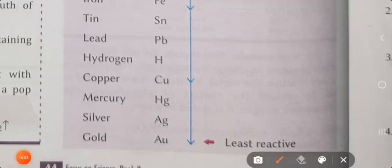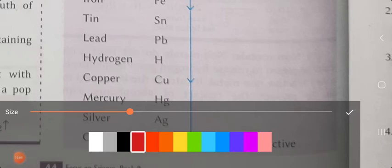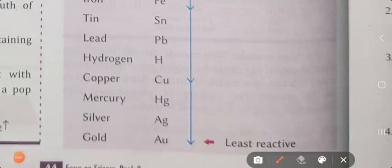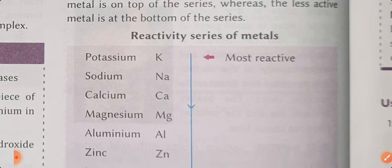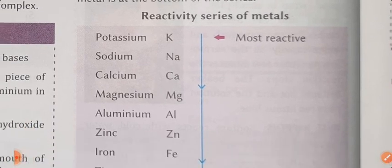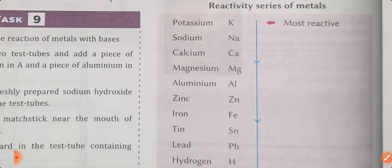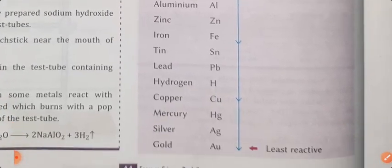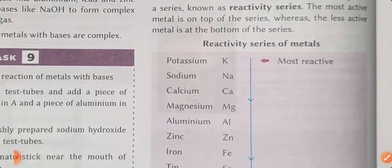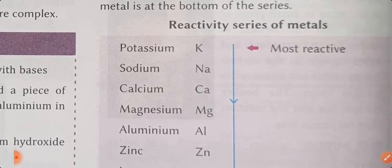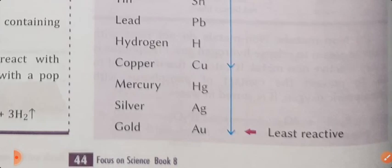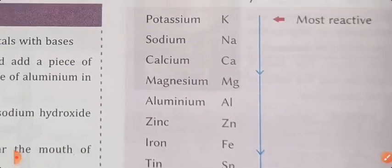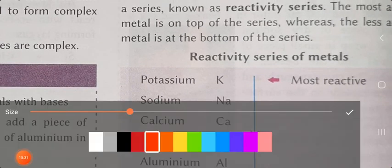Students, underline this point: gold is the least reactive metal, and potassium and sodium are the most reactive metals or elements present in the reactivity series. When you have tests, questions will come from here - which is the most reactive element and which is the least reactive element. Put a double star and underline this point.